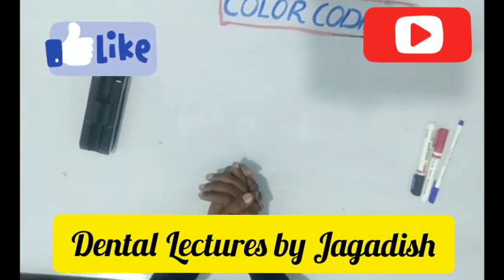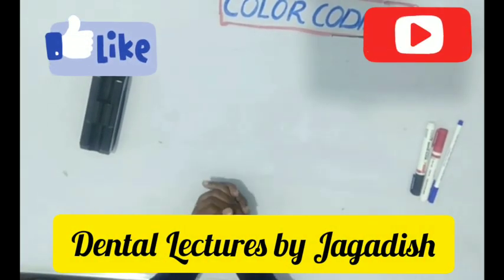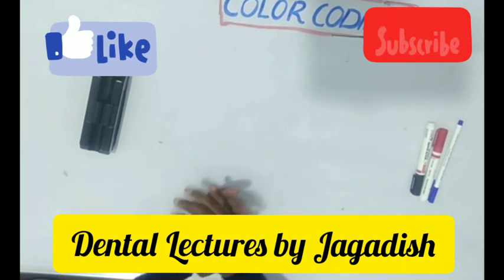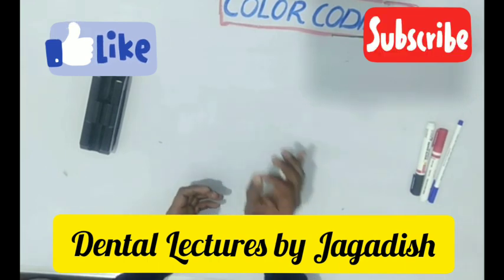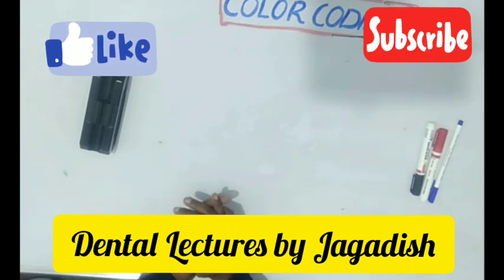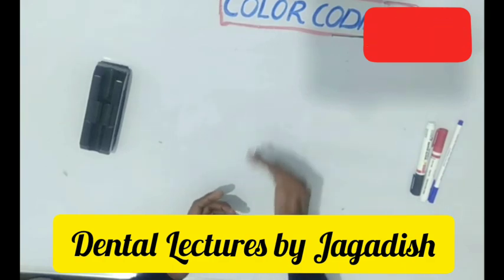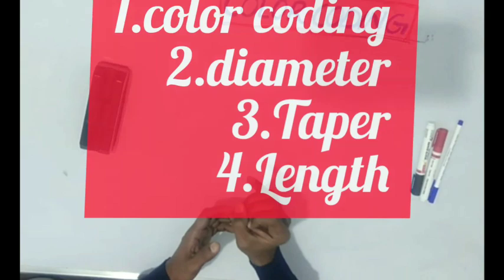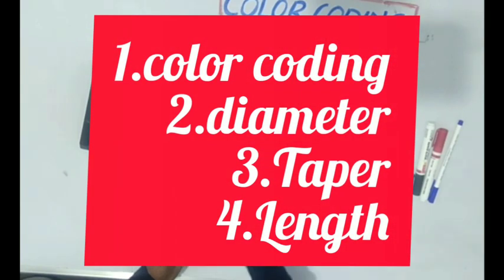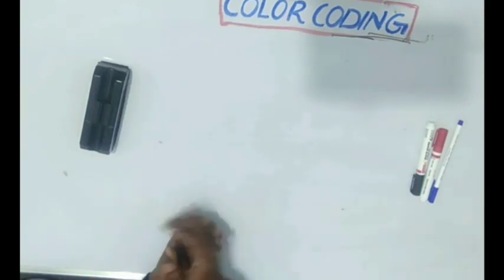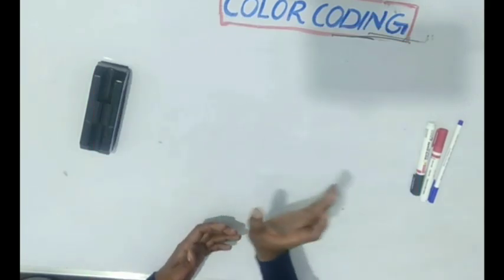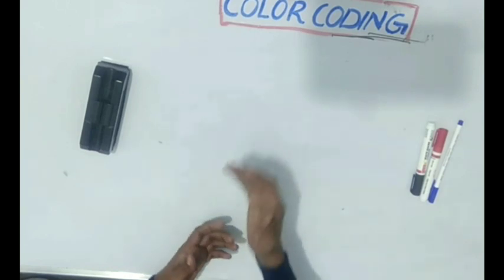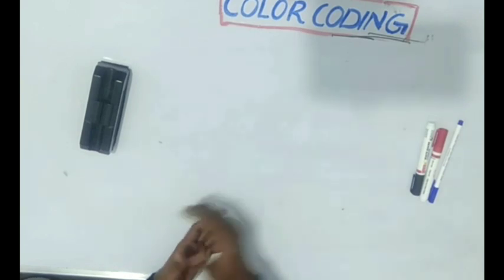Hi, pleasure meeting you all. This is Dr. Jagdives from Dental Lectures. In this session, I am going to explain about standardization of endodontic instruments. For a better understanding, I am going to cover this topic in a series of four lectures, which include color coding of the instrument, tip diameter of the instrument, taper, different tapers of the instrument, and length of the instrument. In this session, I am going to cover color coding. In the remaining sessions, I am going to upload in the upcoming tutorials.